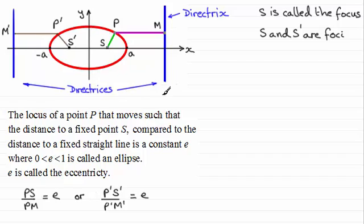Now it can be shown that the equation of this directrix turns out to be x equals a over e, and by symmetry this one over here will be x equals minus a over e.